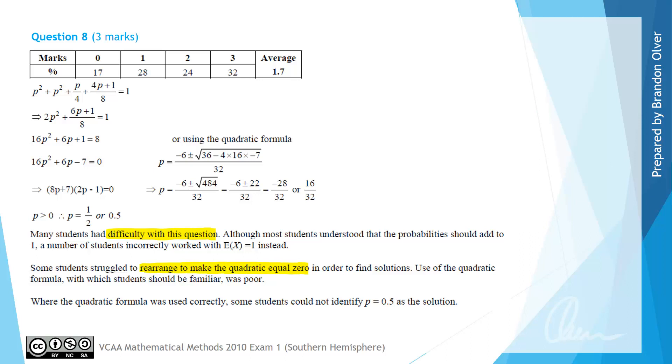And that the use of the quadratic formula, which students should be familiar with, was quite poor. And where the quadratic formula was used correctly, some students could not identify p equaling 0.5 as the solution. So that is just a timely reminder that the general quadratic formula is an important way to solve quadratics when we need it, and that you should be comfortable with simplifying numeric fractions down to p equals a half, or similar to that, to find solutions to these sorts of equations.